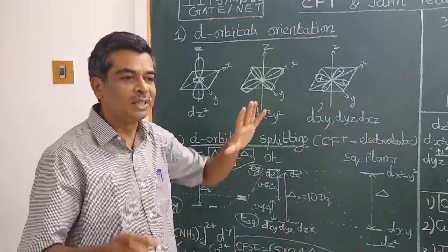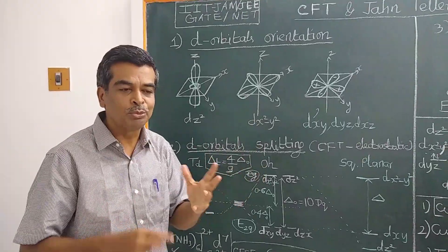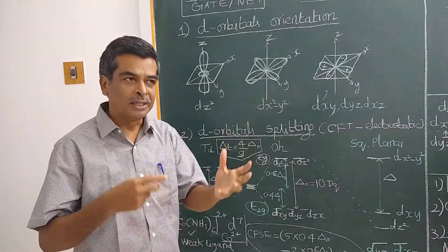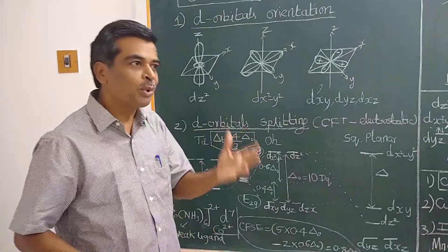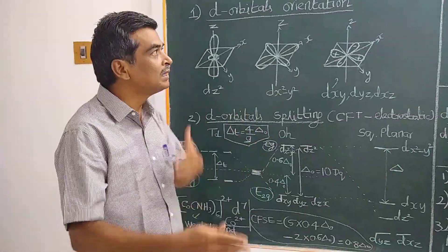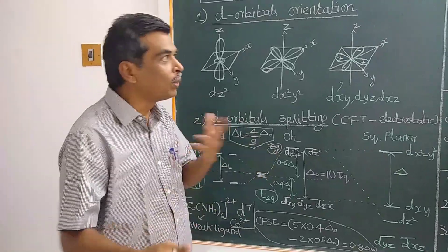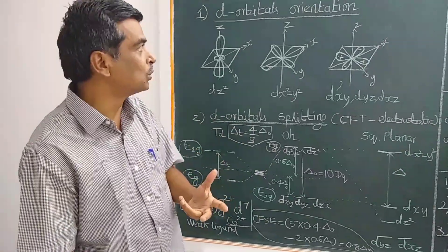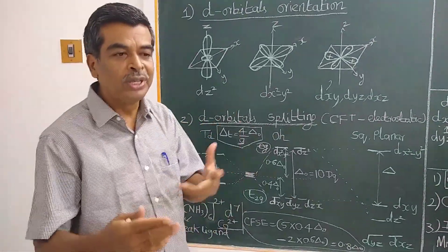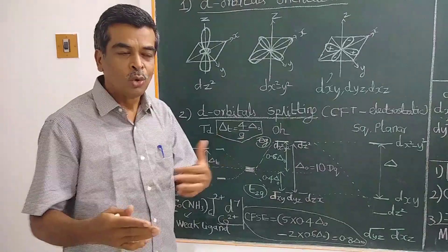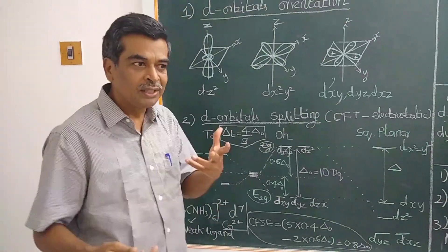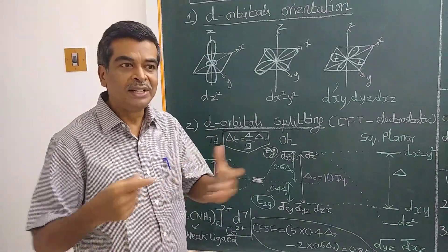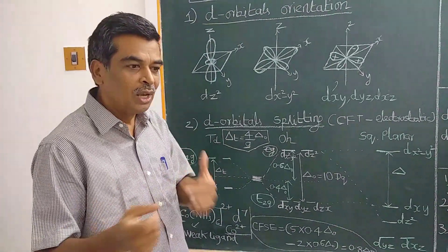Crystal field theory explains the spectroscopic properties and magnetic properties of transition metal complexes. For example, copper is blue or pink in color because of D-D transitions.